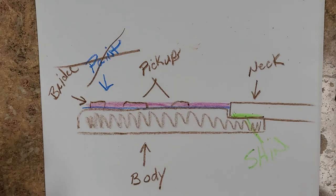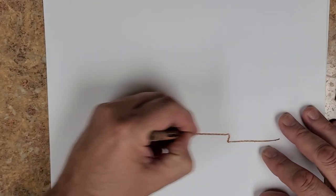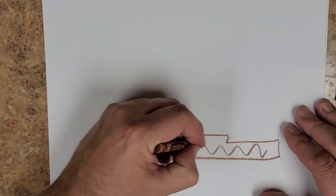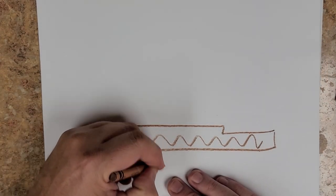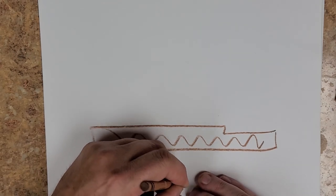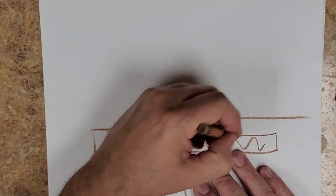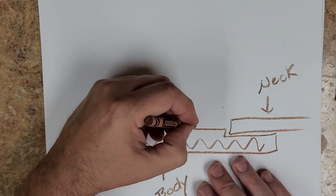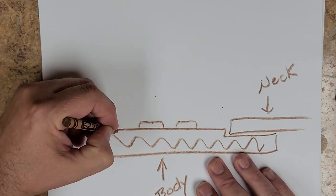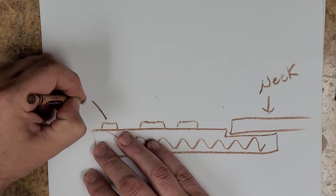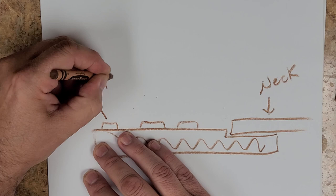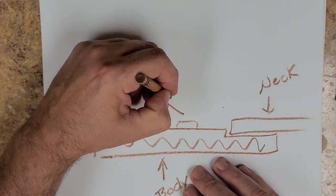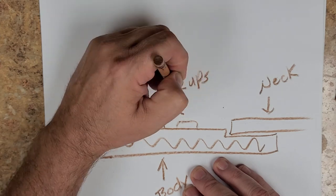Now, another thing is, we'll get rid of this one. We'll save this one for later. Say you have... I'm going to have to label this so he understands. There's the body of the guitar, and again, this is the neck, and you have the pickups, and then you have the bridge.